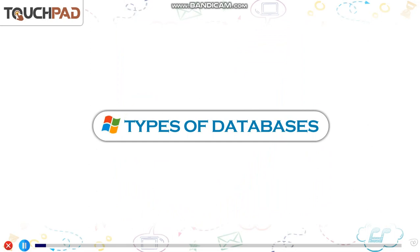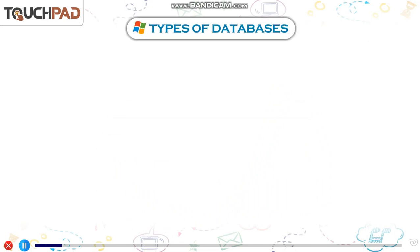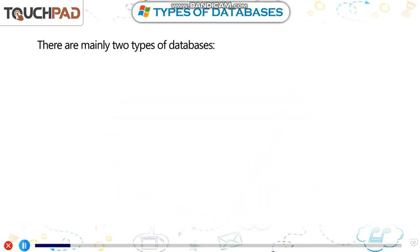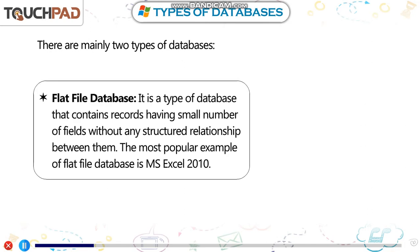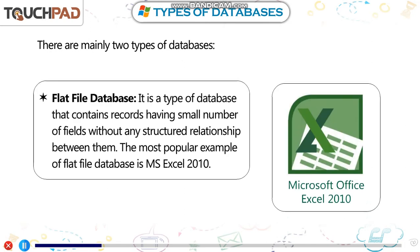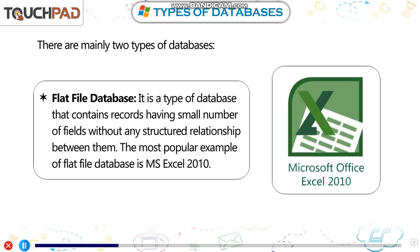Types of Databases. There are mainly two types of databases. Flat file database: it is a type of database that contains records having a small number of fields without any structured relationship between them.